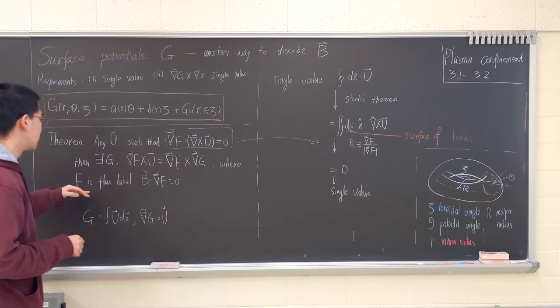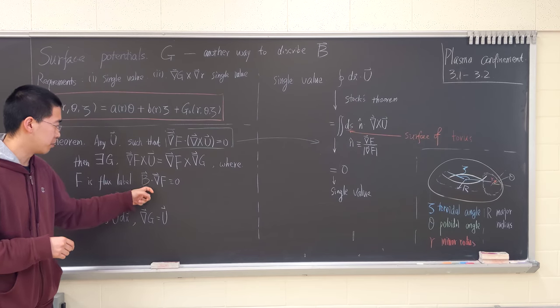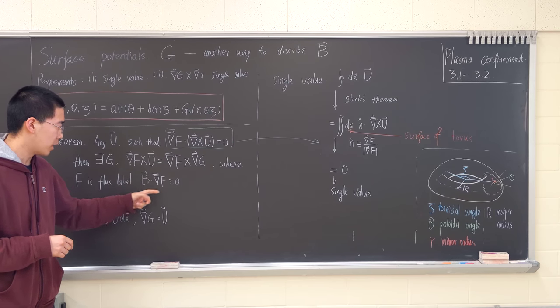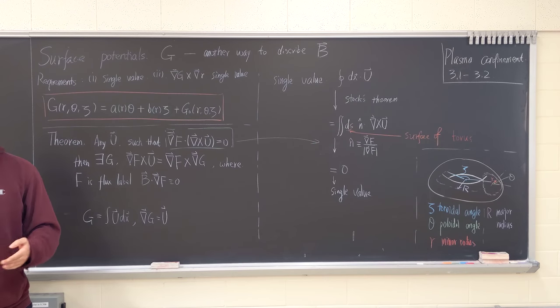The F is a flux label. The flux label is defined as magnetic field B, where B cross grad F equals zero. Or in other words, they're perpendicular.